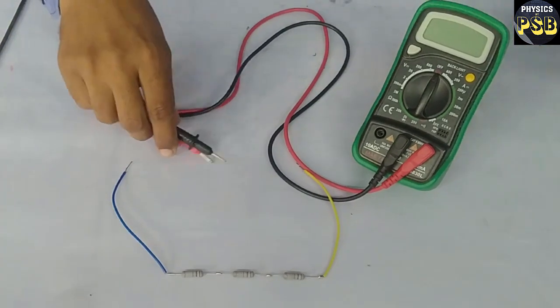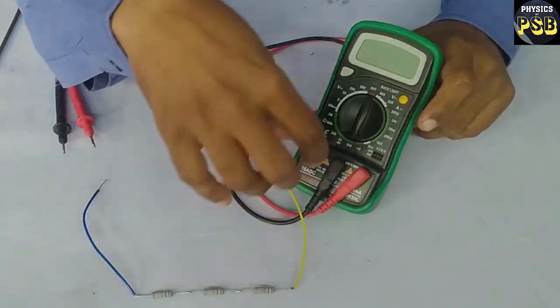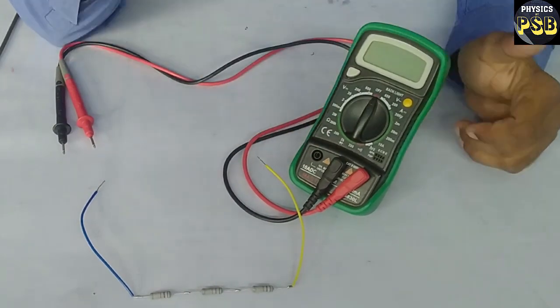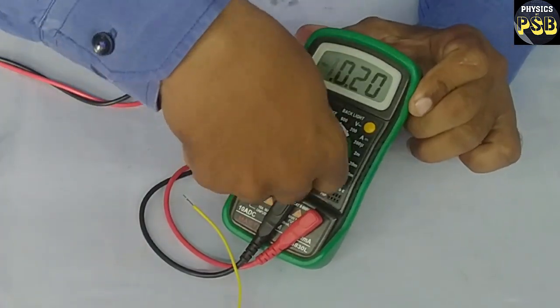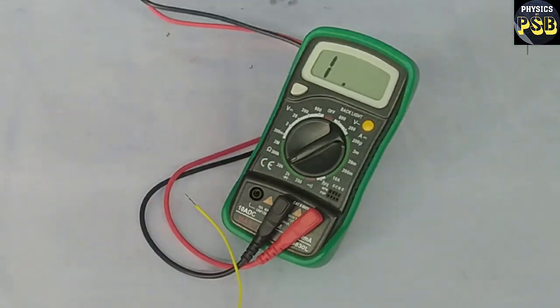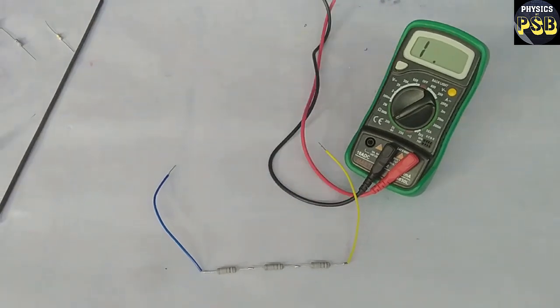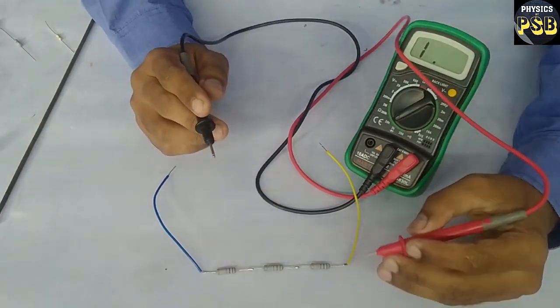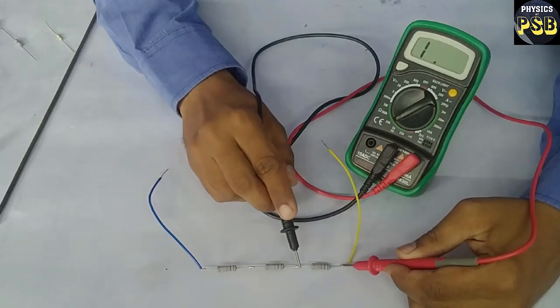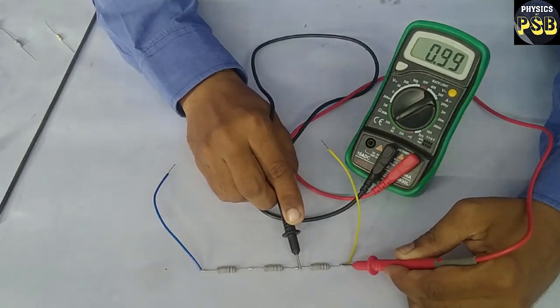First I will set this multimeter to read the resistance. For that I will turn this towards this. Now it's capable of reading resistance up to 20 kilo-ohms. First I will place the probe between these two ends, across the first resistor. It reads 0.99, that means 1 kilo-ohm.